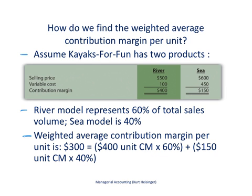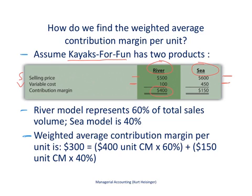Let's look at a company called Kayaks for Fun that sells kayaks. This company has two products: a river kayak and a sea kayak. The selling price is $500 for the river kayak and $600 for the sea kayak. The variable cost per unit is $100 for the river kayak and $450 for the sea kayak. So the contribution margin per unit — selling price minus variable cost per unit — is $400 for the river kayak and $150 for the sea kayak.